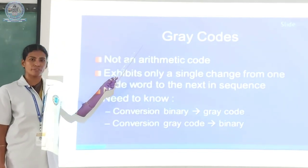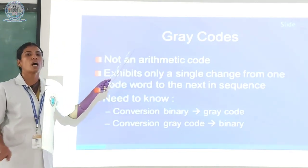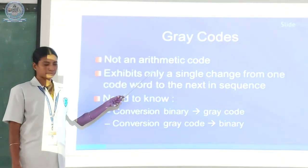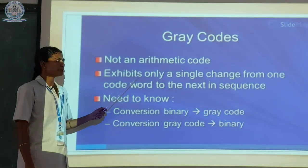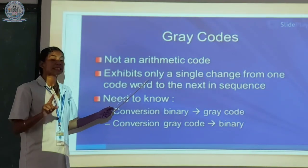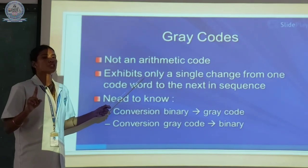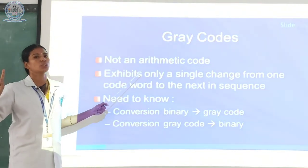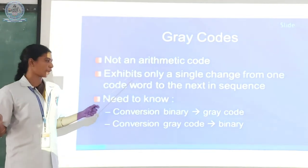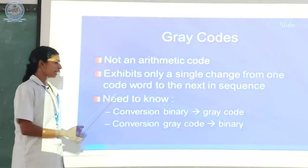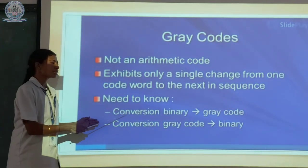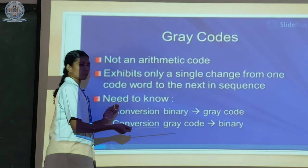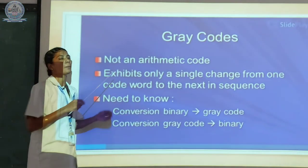The next slide is gray code. Gray code is known as a non-weighted code or otherwise it is not an arithmetic code. It exhibits only a single bit change from one code to the next in sequence order. Here we see conversion of binary to gray code and gray code to binary — how to convert both ways.